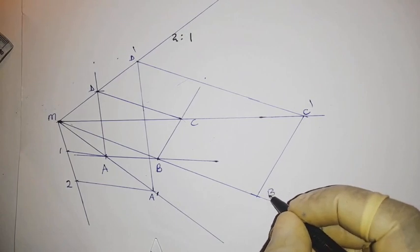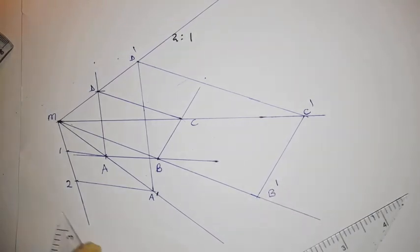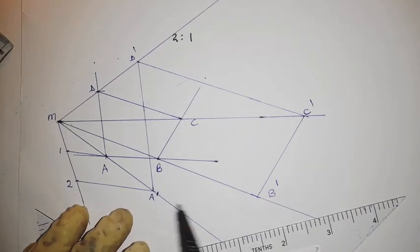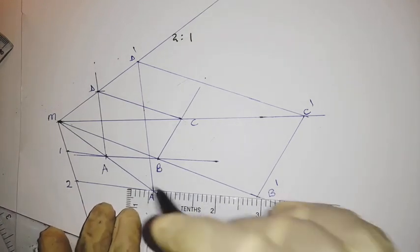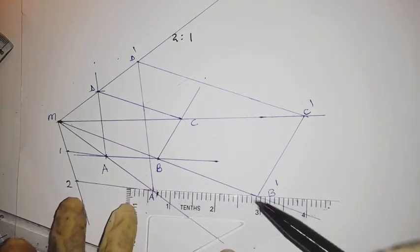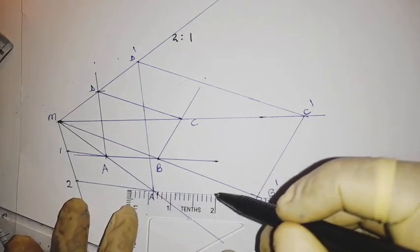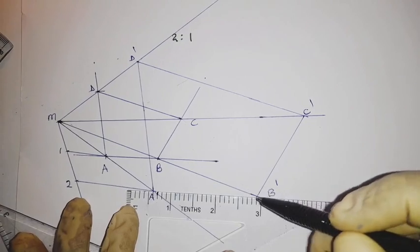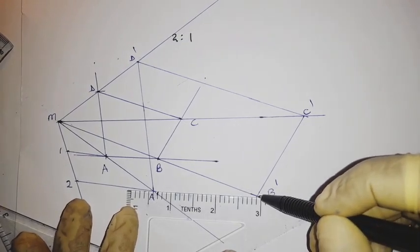Now point A prime and B prime can just be connected because they are parallel to this. So it's just a straight line parallel to this. Draw it.